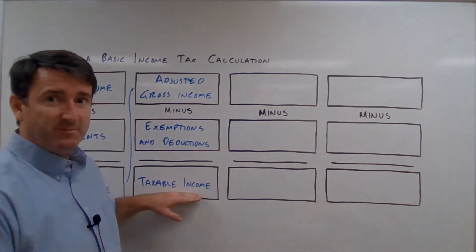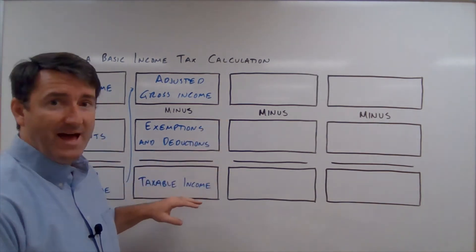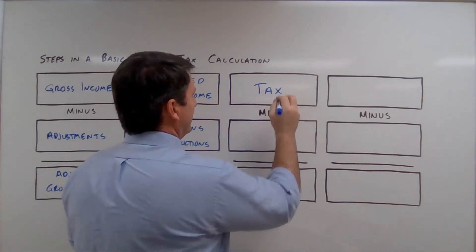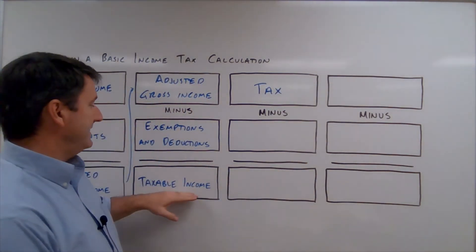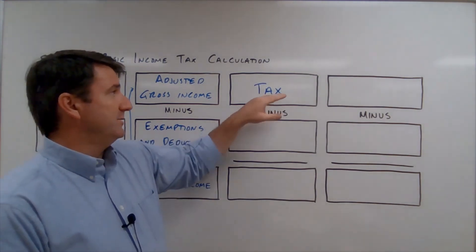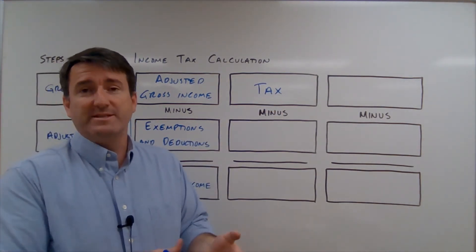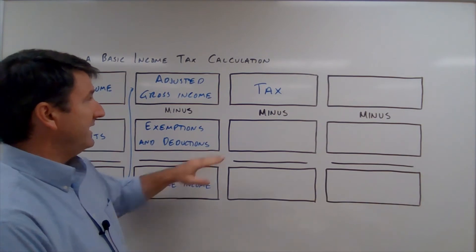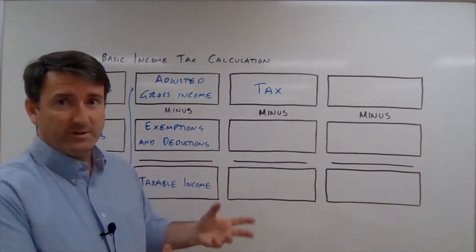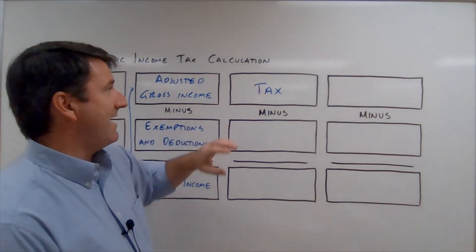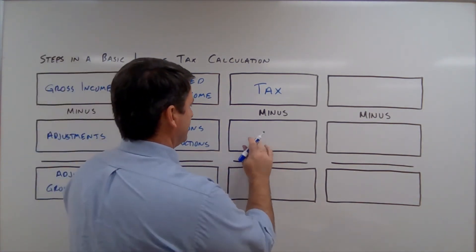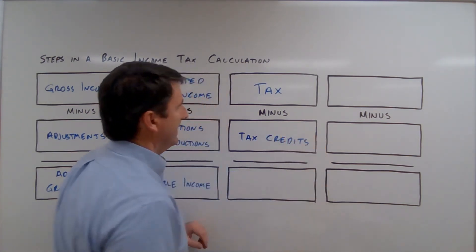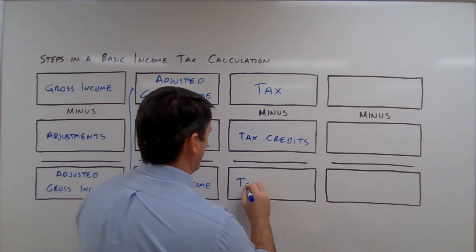Then, once we have our taxable income, we calculate from that the amount of tax owed on that amount of income. This calculation — going from taxable income to the amount of tax — is going to be the subject of lesson 5.8. Once we have that tax, we subtract tax credits, and tax minus tax credits gives us our total tax.